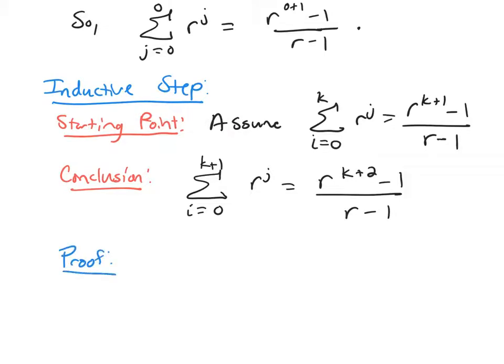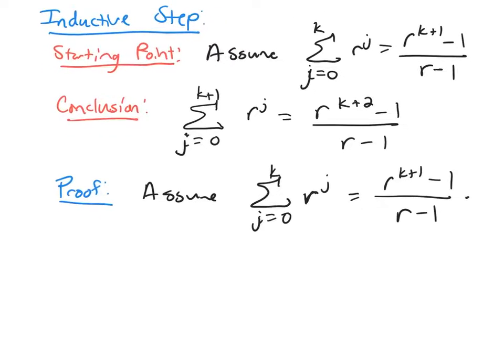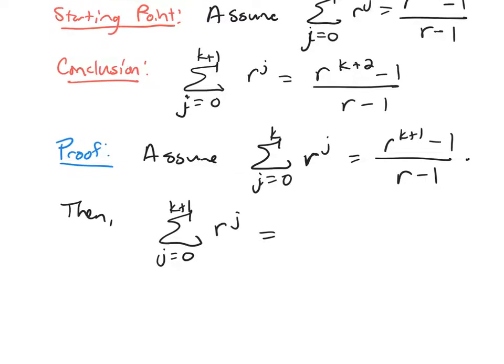The proof, you start with your starting point. The sum from j equals 0 to k of r to the j equals r to the k plus 1 minus 1 over r minus 1. And now we look at our conclusion and we're going to start with the left-hand side. The sum from j equals 0 to k plus 1, r to the j. So I'm going to use my properties of summations and break this up into j equals 0 to k plus r to the k plus 1.